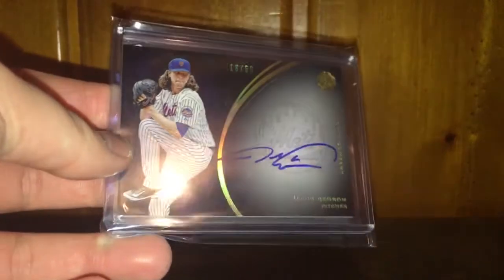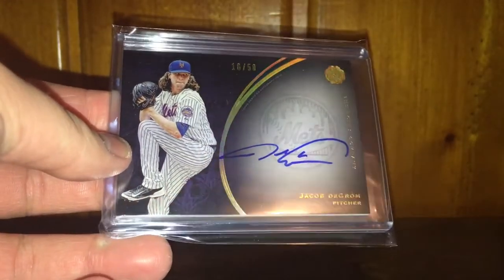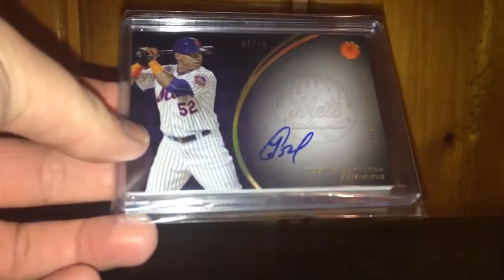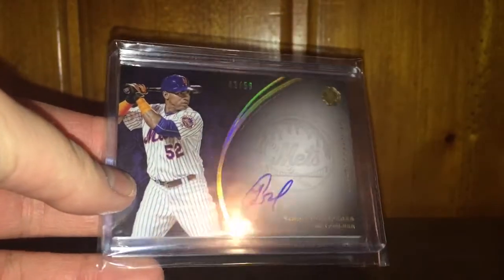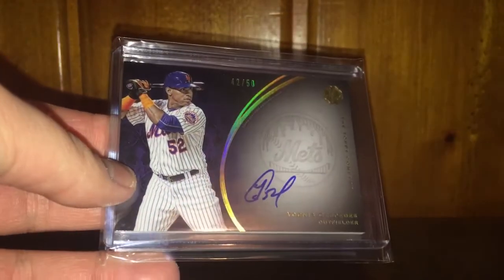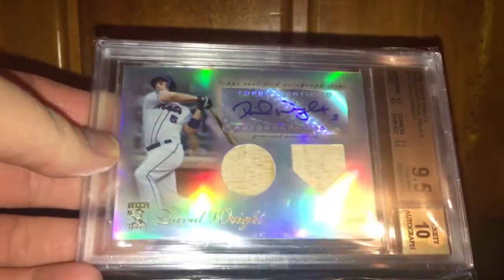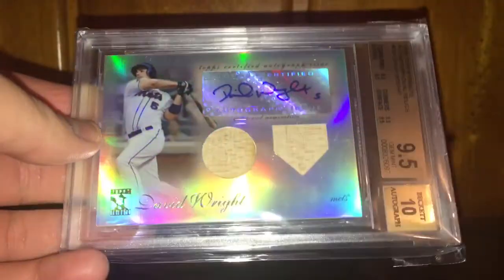Next up, one of the more recent pickups, Jacob deGrom on-card autograph numbered to 50. This guy's killing it. Yoenis Cespedes, wish he had more Mets stuff out there, but what can you do. On-card numbered to 50. Hopefully my voice doesn't go out. This was a gift in a care package, I believe it was a Christmas present from Two Four Nathan Oak.